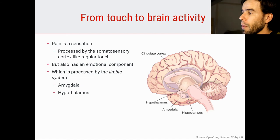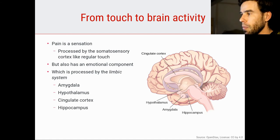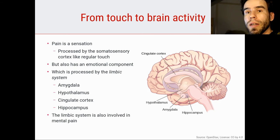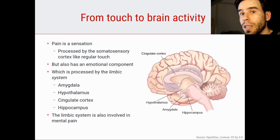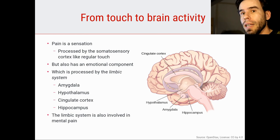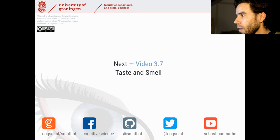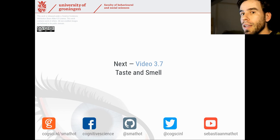The amygdala, the hypothalamus, the cingulate cortex, and the hippocampus are all part of the limbic system, but the amygdala is especially involved in the processing of negative emotions. What is quite interesting is that the limbic system is also involved in mental pain. In a way, it shows that negative things — regardless of whether they are mentally or physically negative — are processed in similar ways. With that, let's move on to the next video, video 3.7, in which we're going to take a look at taste and smell.